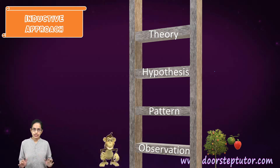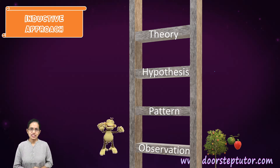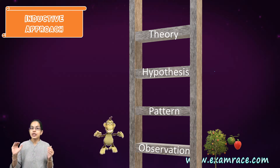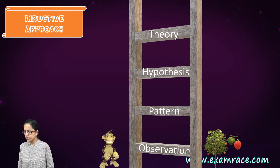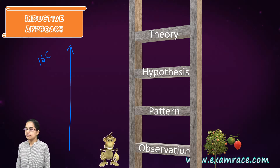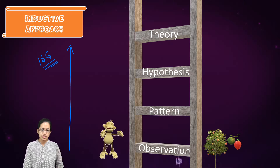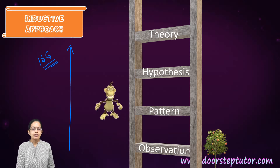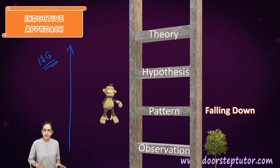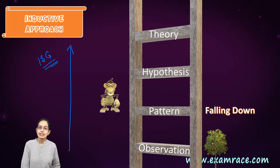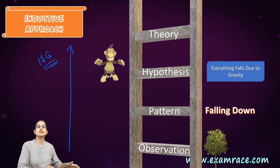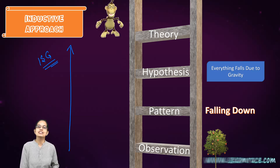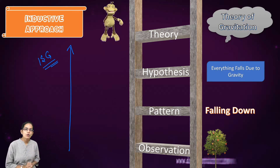For the inductive approach, consider our friend Monkey. He makes observations — he sees an apple falling, bananas falling, papayas falling. Under the inductive approach, we start with observations and move toward theory building. From these observations, he identifies a pattern: everything falls down. With this pattern, he lays down a hypothesis — everything falls due to gravity. Finally, he builds a theory: the theory of gravitation. This is how we move from specific observations to a general theory.